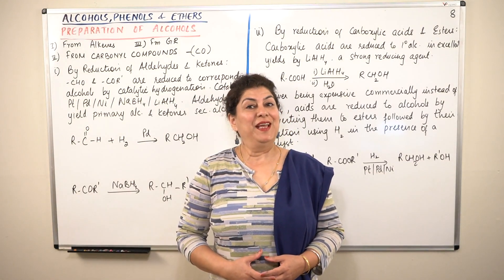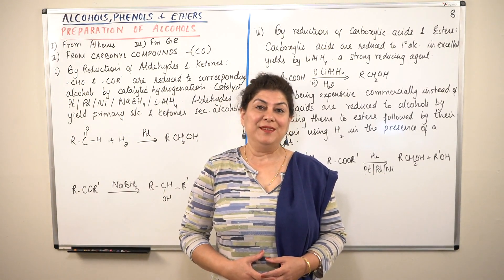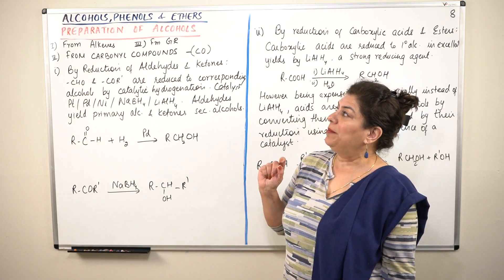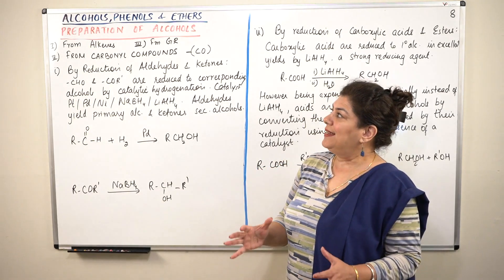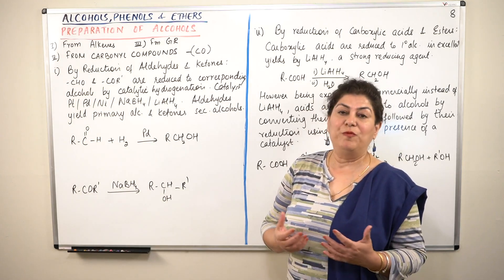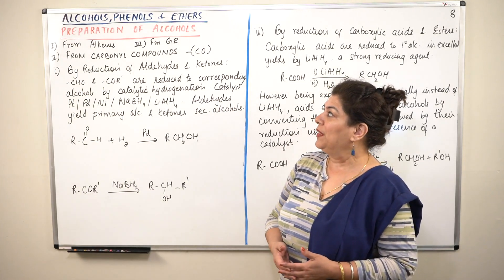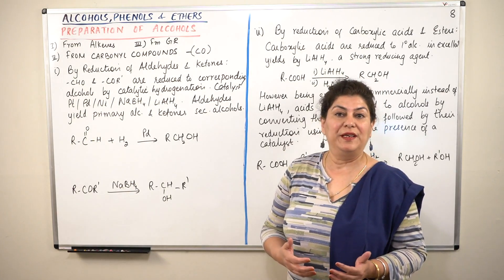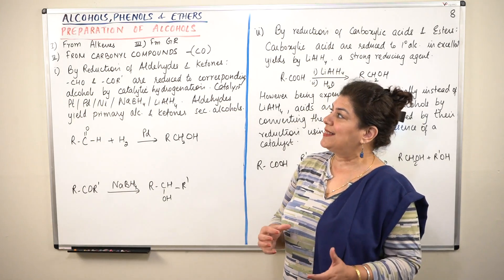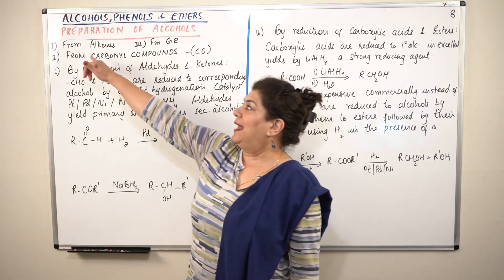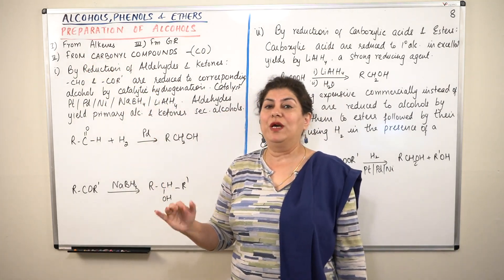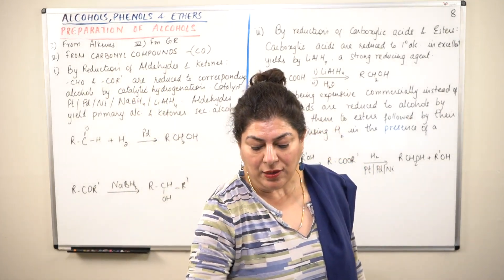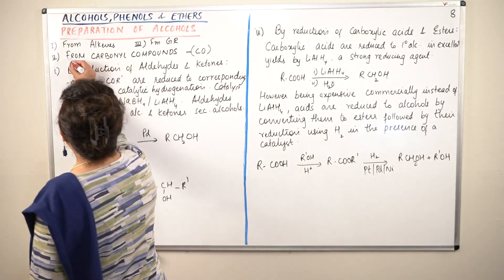Hello, I am Seema and welcome to part 8 of the chapter alcohols, phenols and ethers. In the previous video I was telling you about the methods of preparation of alcohols and I told you that there are three sources from which alcohols can be prepared. The first is from alkenes, the second is from carbonyl compounds and the third is from Grignard's reagents. In the previous video we discussed preparation from alkenes. In this video we are going to do the second source, that is from carbonyl compounds.